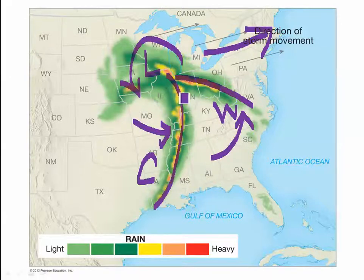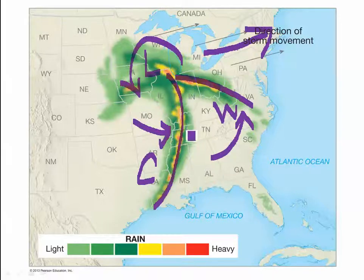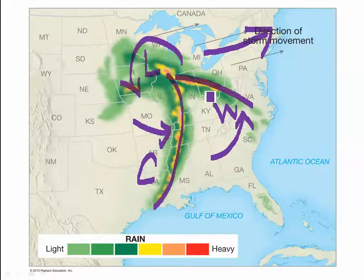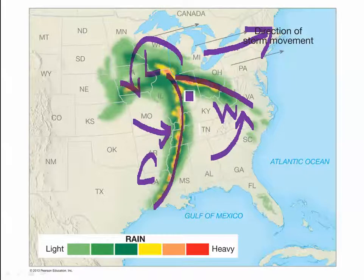So the states that are going to be affected in just the next few hours are going to be Indiana, Kentucky, Tennessee, Mississippi, Alabama, and maybe depending on how fast it moves, Ohio and maybe Georgia as well. So as this front moves across the states, they're going to get severe thunderstorms.